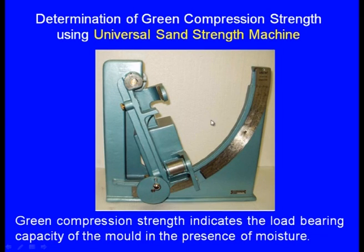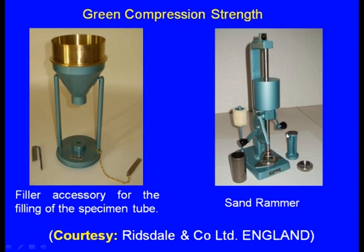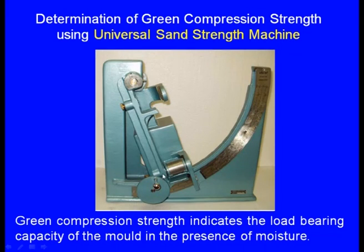There is a universal sand strength machine. We prepare the sand specimen using the tube, rammer, and specimen separator. The specimen is kept on the machine. There is a pendulum and a scale — for green compression strength there is one scale, for green shear strength another scale, for dry compression and dry shear strength two more scales. For measuring green compression strength, the specimen is placed at the bottom between plane holders, and we rotate the pendulum — as it goes up, its weight falls on the sand specimen.